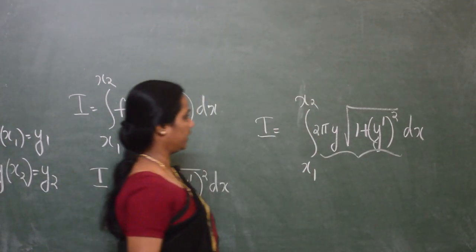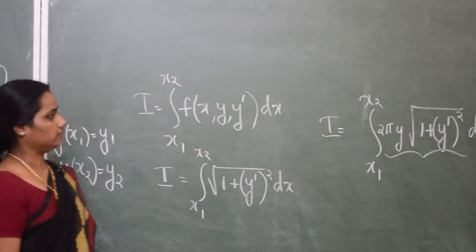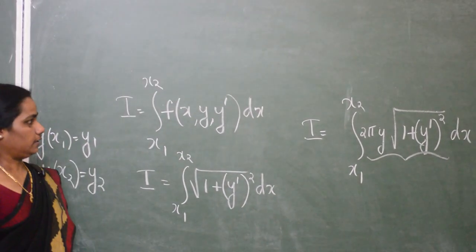In this case, we have f of x, y, y dash equal to 2 pi y root of 1 plus y dash square.